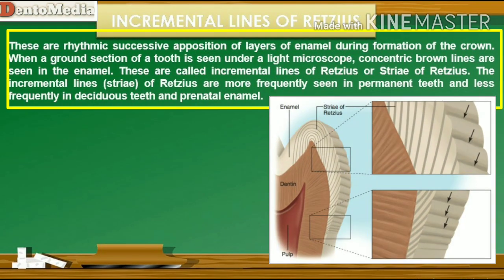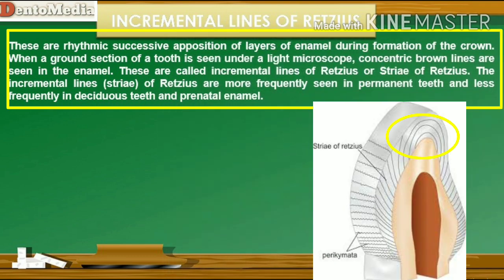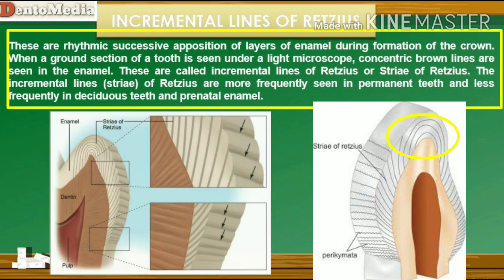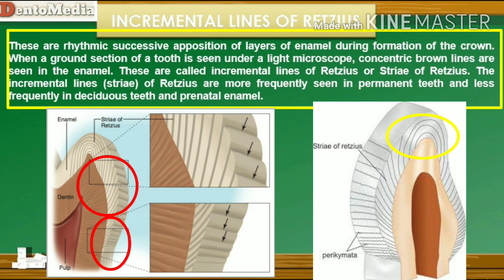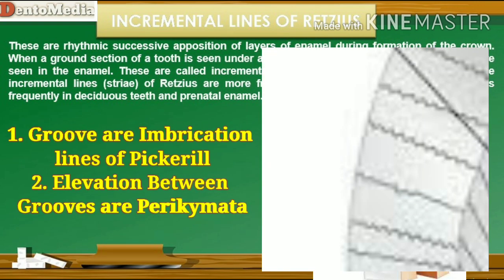Incremental lines of Retzius are rhythmic successive apposition of layers of enamel during formation of the crown. When a ground section of a tooth is seen under a light microscope, concentric brown lines are seen in the enamel — these are called incremental lines of Retzius or striae of Retzius. In longitudinal sections, the lines traverse the cusp and incisor area in a symmetrical arc pattern, descending obliquely to the dentino-enamel junction. In the cervical part of the crown, they run obliquely, deviating occlusally from the dentino-enamel junction to the surface. When these circles are incomplete at the enamel surface, a series of alternative grooves called the imbrication lines of Pickerill are formed. The elevations between the grooves are called perikymata.